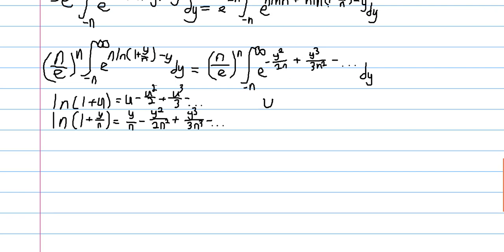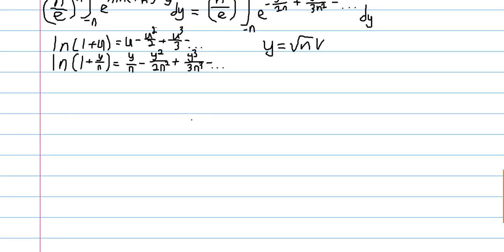And then, we consider another substitution, which is y is equal to the square root of n times v. This substitution will give us a term of square root of n outside, that I'll bring outside of the integral. And it will cancel out with, once we plug in this for each of these y's in the series, we'll get some cancellation. Namely, this first term won't have any n's, and all these terms will have n's. And then, our bounds will change. In summary, we get the following integral.